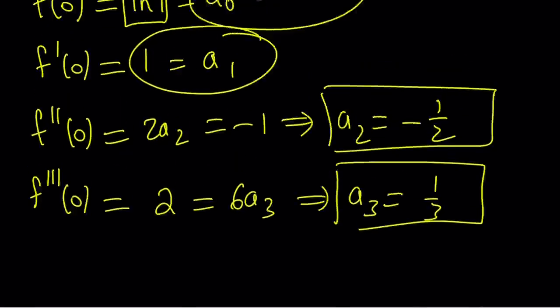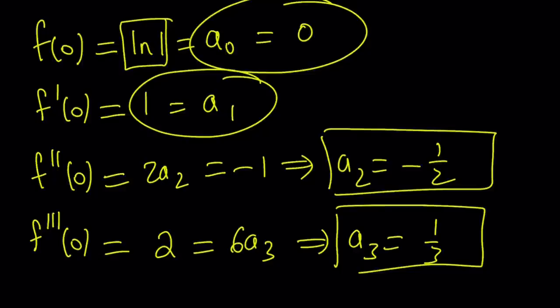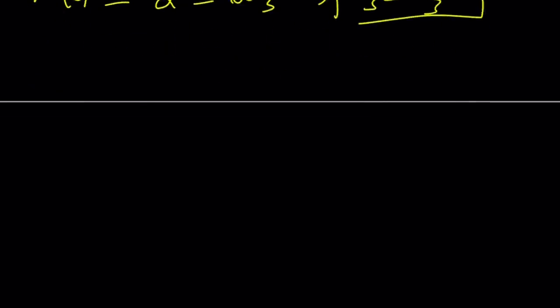Let's take a look at these numbers. We have 0, forget about it, there's no constant. a₁ is the coefficient of x, which is 1. Then we have 1/2, and then 1/3.